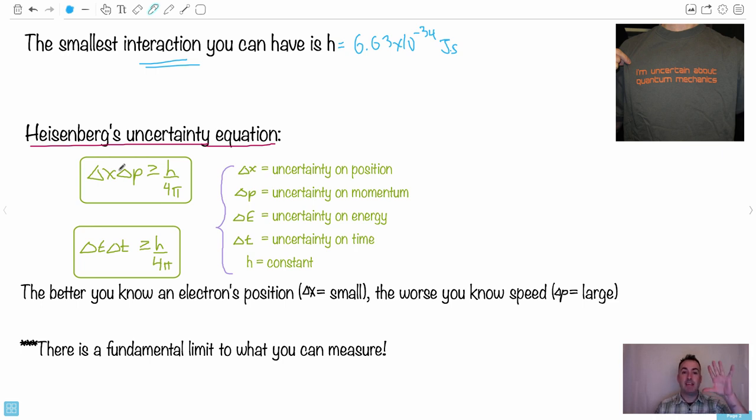What it means is that if you know something's position really, really well and accurately, that means that your delta X gets really, really small. In order for this inequality to hold, delta P has to go bigger, which means the better you know, that's why I write it down here, the better you know an electron's position. So if you know an electron's position, so delta X is really, really small, the worse you know the speed because delta P is really large and vice versa.